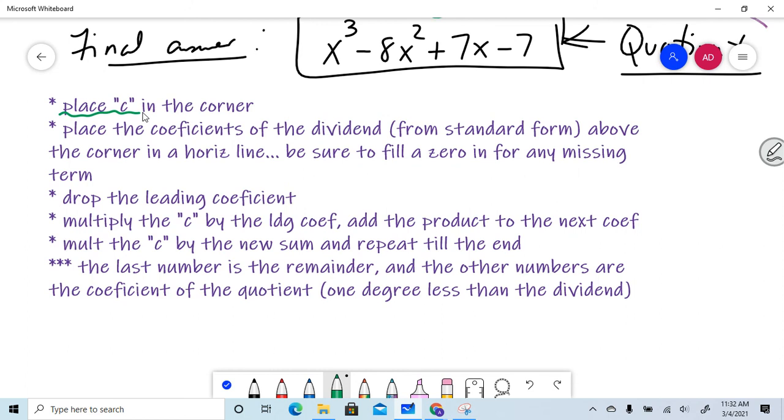First off, place the C in the corner. Remember, it's X minus C. So you always are taking the opposite of that divisor, if that makes sense. Place the coefficients of the dividend, that are in standard form, by the way, above the corner in a horizontal line. Be sure to fill a zero in for any missing term.